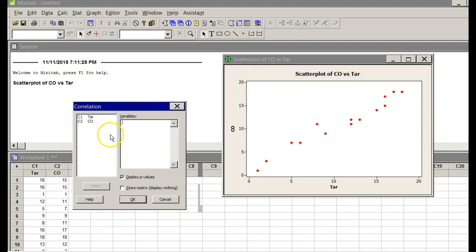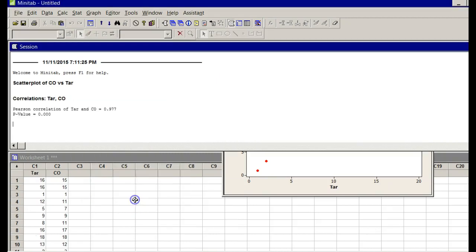This is the menu that it gives you. The variables - I'm going to double click on tar, double click on carbon monoxide. Those two, that's all I need to do. Click OK.